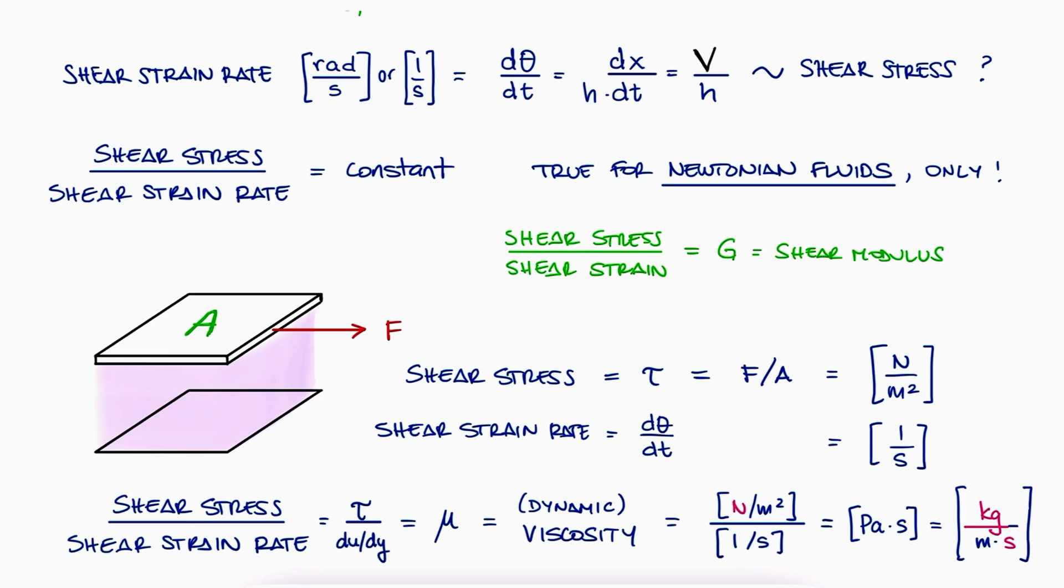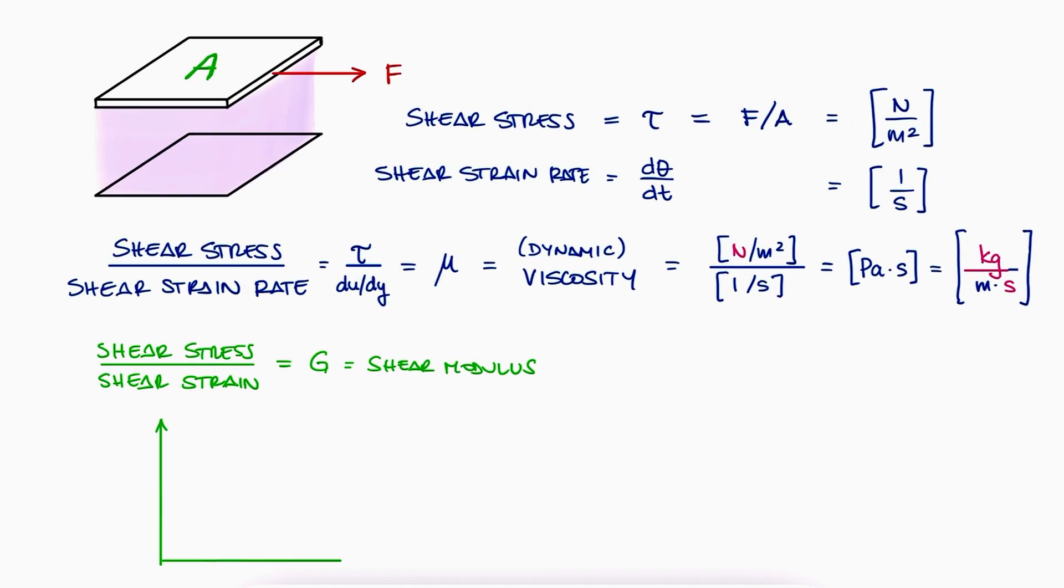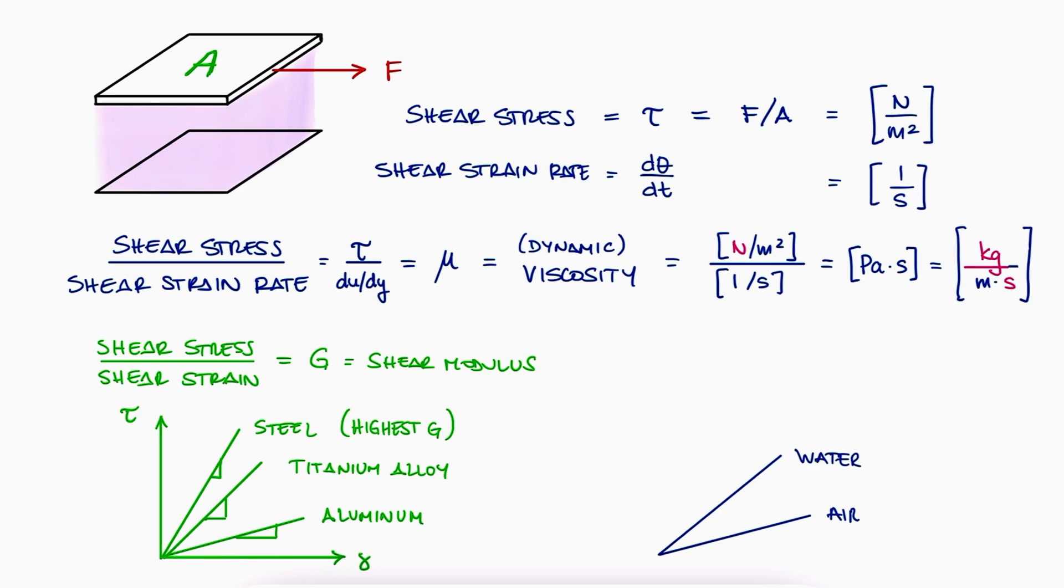Going back to our analogy, just like we can plot the elastic stress-strain relationship between metals, for example aluminum, a titanium alloy, and steel, meaning that steel has a higher shear modulus and is stiffer than aluminum, we could plot air, water, and oil on a shear stress versus strain rate diagram to say that oil is more viscous than water.